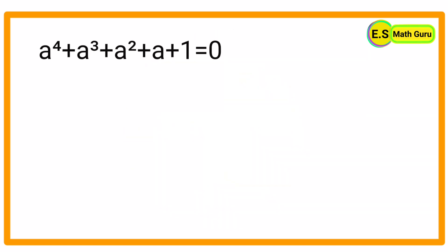Now, let us learn how to find its value. For that, let us take the given equation, that is a⁴ + a³ + a² + a + 1 = 0, and simplify it by multiplying (a - 1) on both sides.